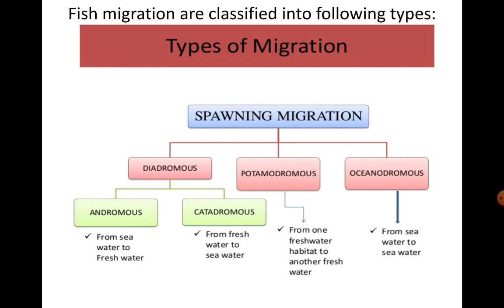For the purpose of the syllabus, fish migration is classified into the following types. You need to learn about anadromous and catadromous migration, which are part of spawning migration. Spawning migration can be divided into three types: diadromous, potamodromous, and oceanodromous migration.